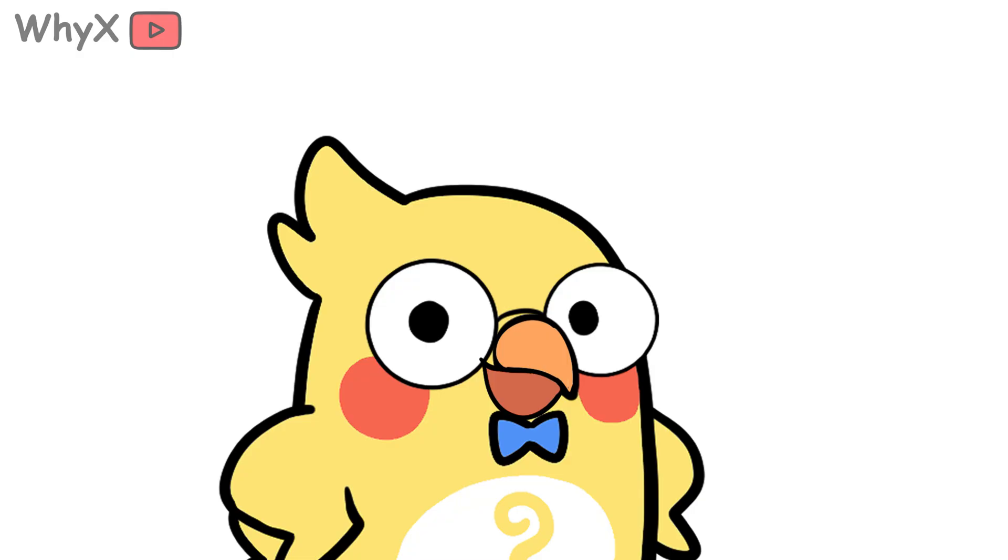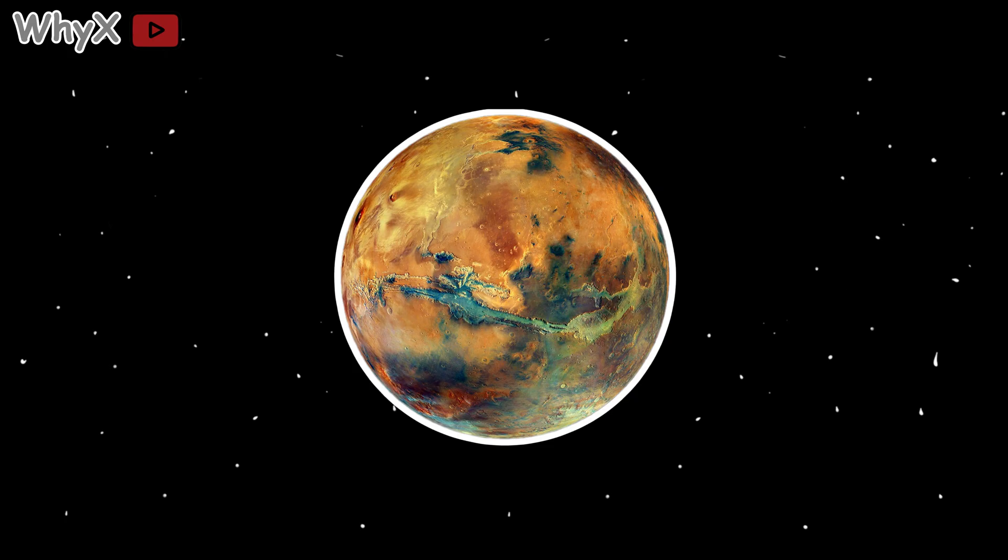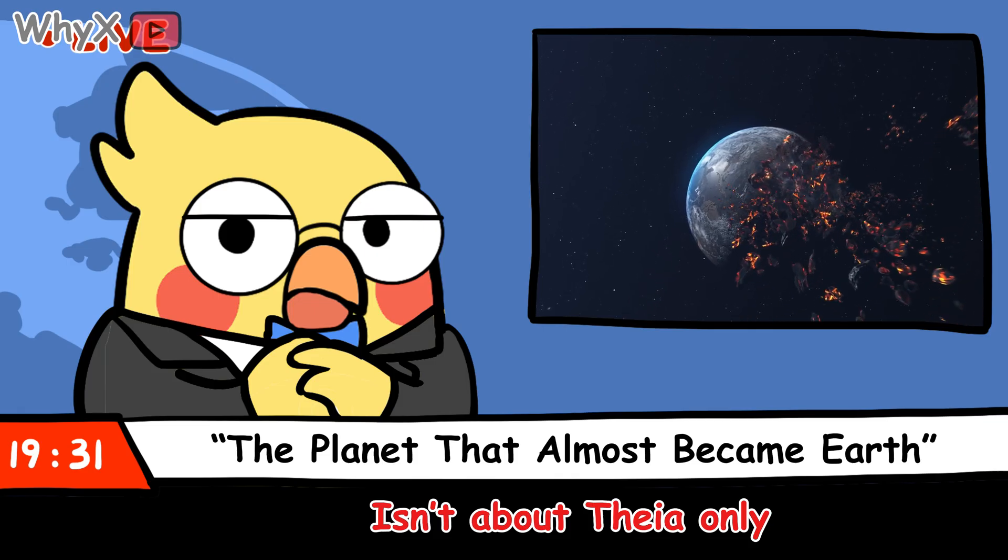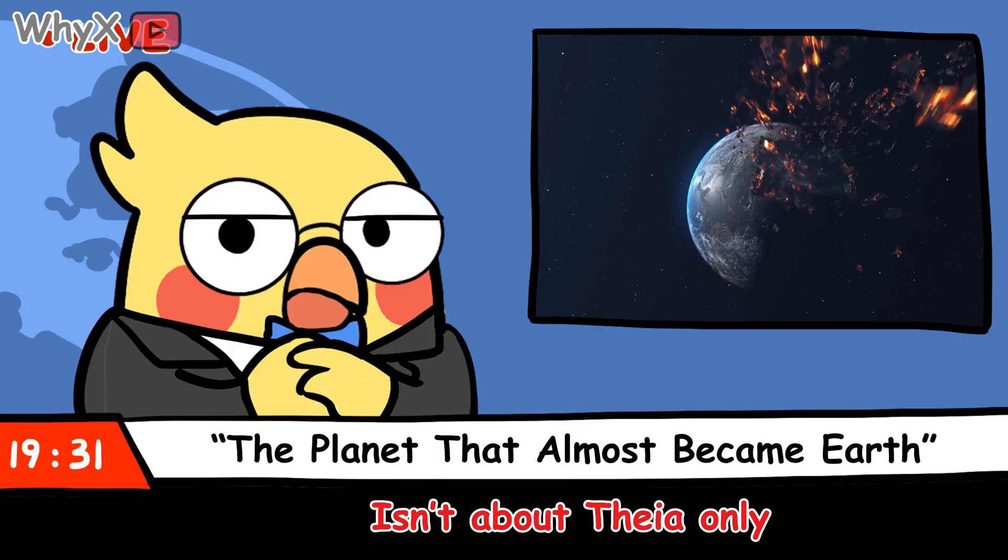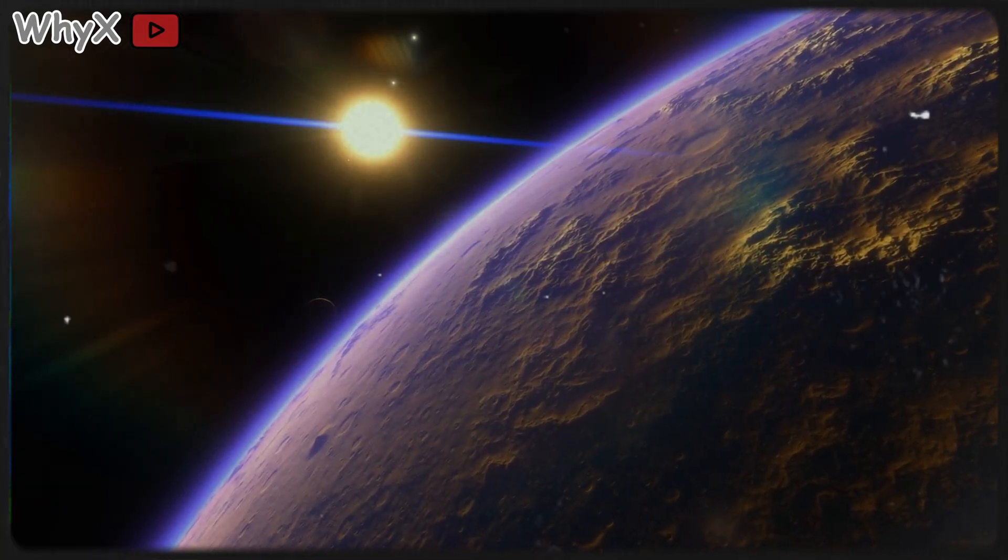There's a version of events where that impact doesn't happen, or it happens off-angle, or it hits too late to matter. There's a version where we end up as Venus with better sunsets, or Mars with a nicer color palette. We got the version with a moon that steadies seasons and stirs tides, a magnetic shield that guards air and ocean, and a crust that won't sit still. The headline—the planet that almost became Earth—isn't about Theia only. It's about every fork in the road where the physics could have picked a different phrase.